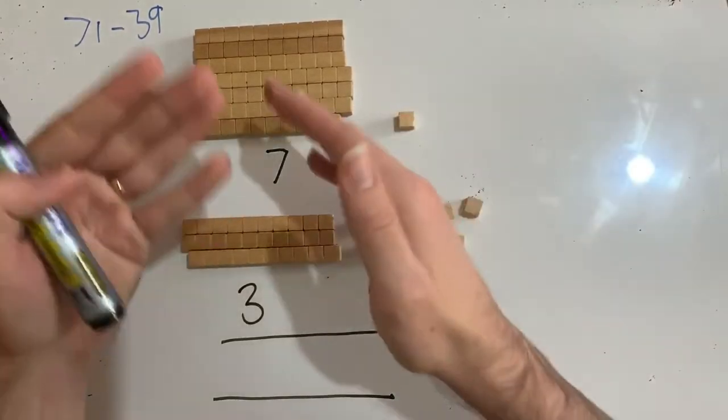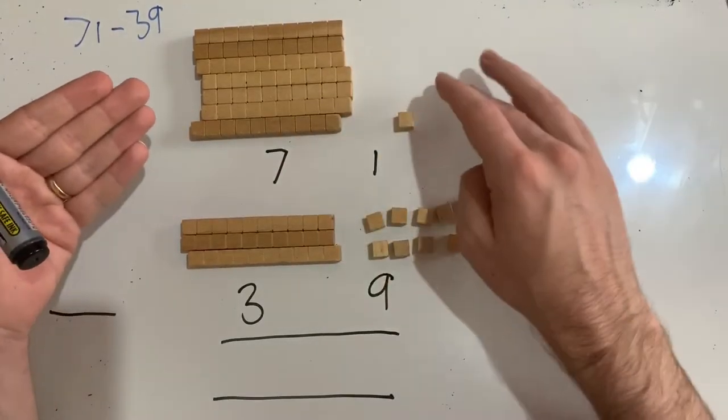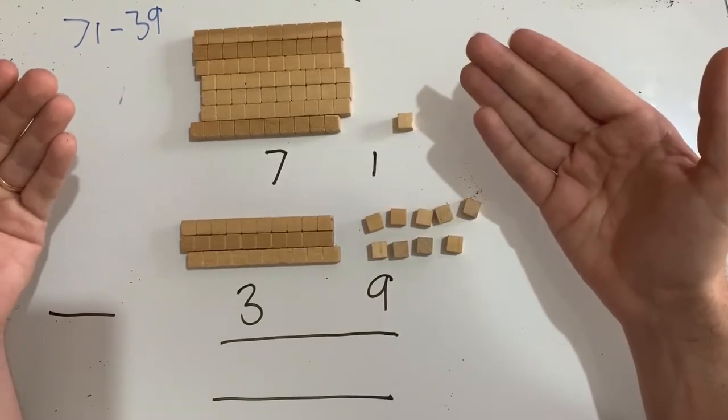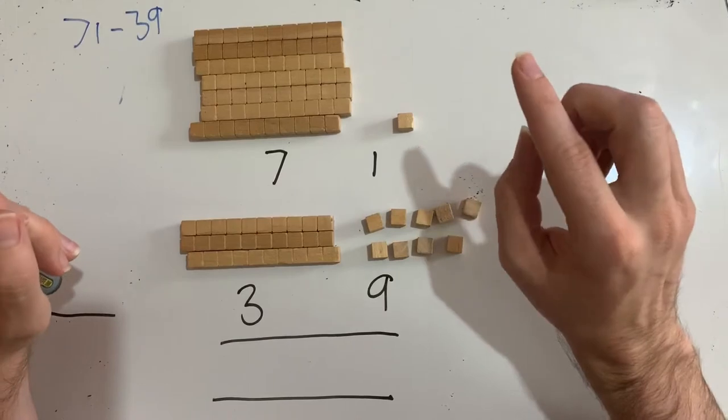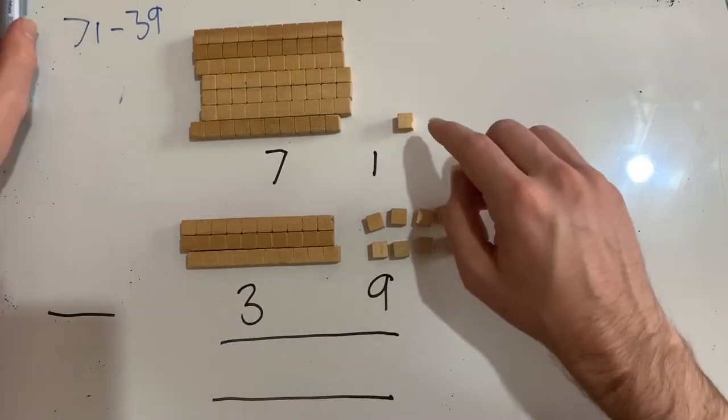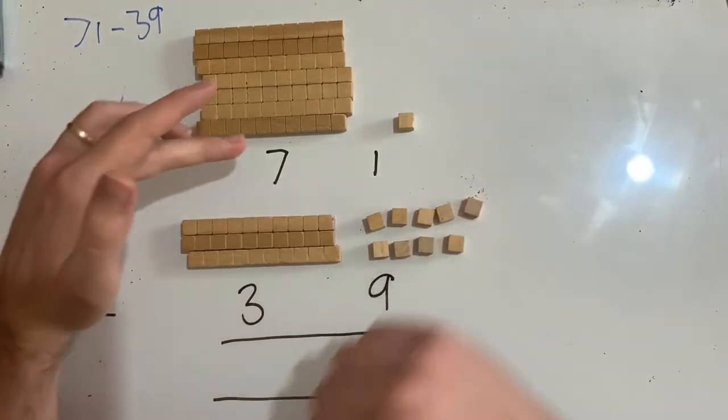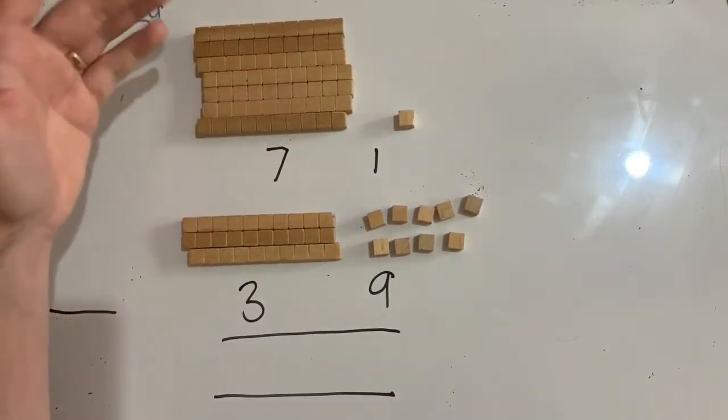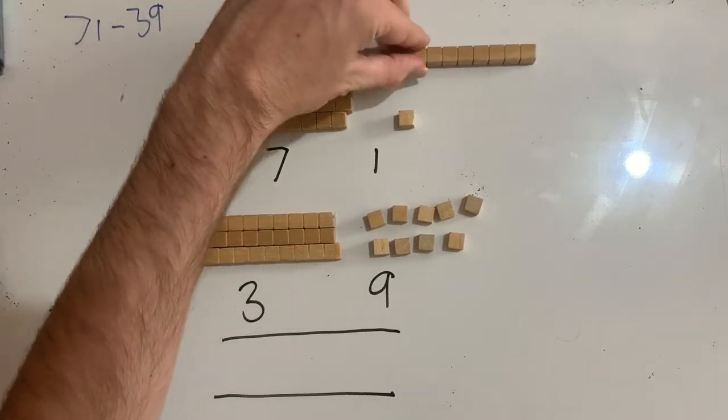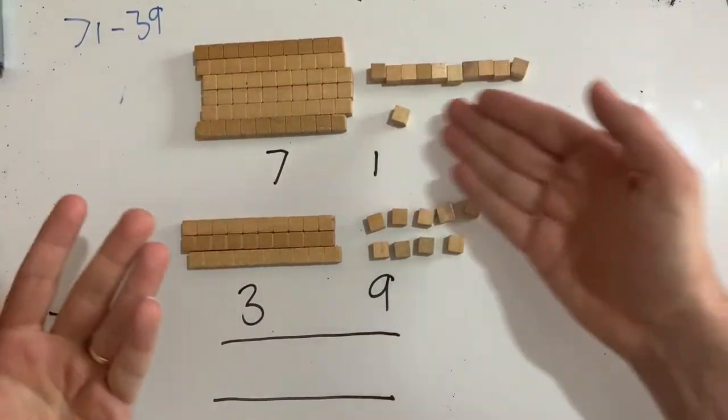We actually need to think about it as a whole number now. So I don't just have one unit here. I've actually got 71 units and I can take, I've got enough numbers to be able to do this, but how do I think about this? Well, the way we do this is with some trading. So what I can actually do here is because I can't take nine from one, I need to borrow some numbers from somewhere else. Where am I going to get them from? I'm going to look at all these numbers here. I can take something from there. I can take 10 and I'm going to move it over here and I'm going to turn this into 10 units.